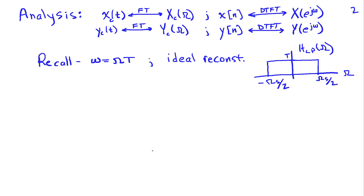To analyze this problem, let's write down a few facts. The Fourier transform of Xc(t) is Xc(Ω), and the Fourier transform of the continuous-time output Yc(t) is Yc(Ω). The discrete-time signals X(n) and Y(n) have discrete-time Fourier transforms X(e^jω) and Y(e^jω). One key fact is that discrete-time frequency ω (lowercase) equals continuous-time frequency Ω (uppercase) times the sampling interval T.